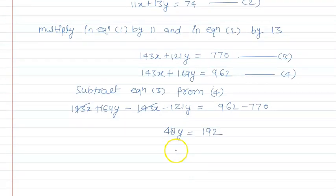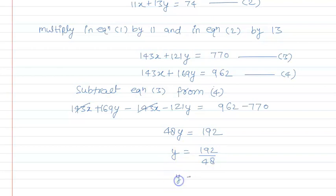Now, simplifying further: y = 192 / 48, and therefore y = 4.